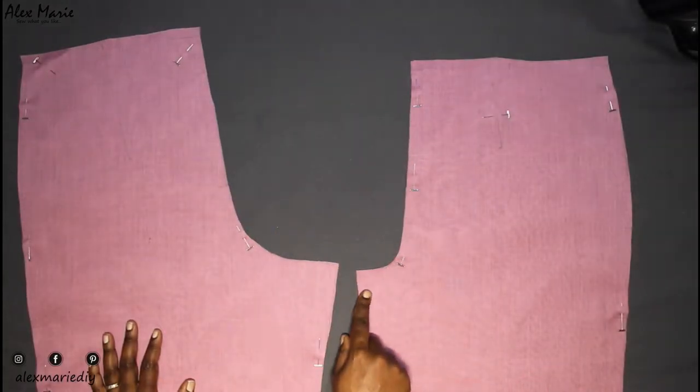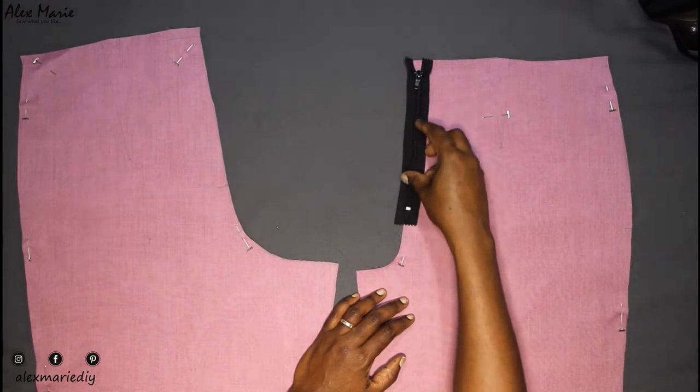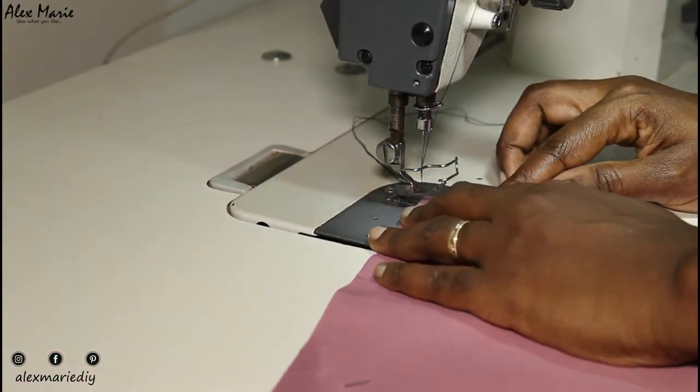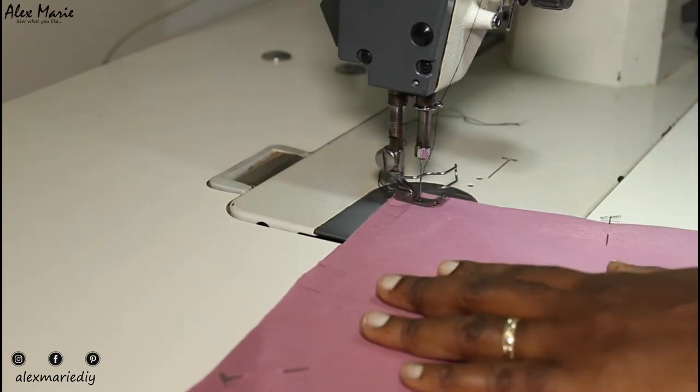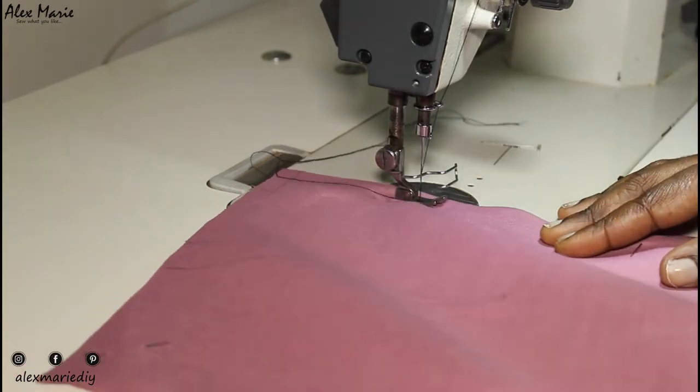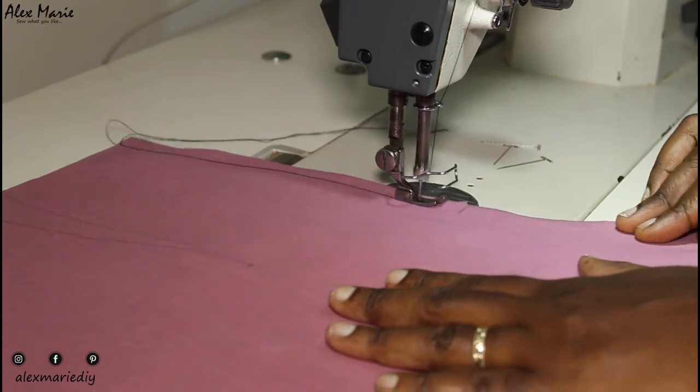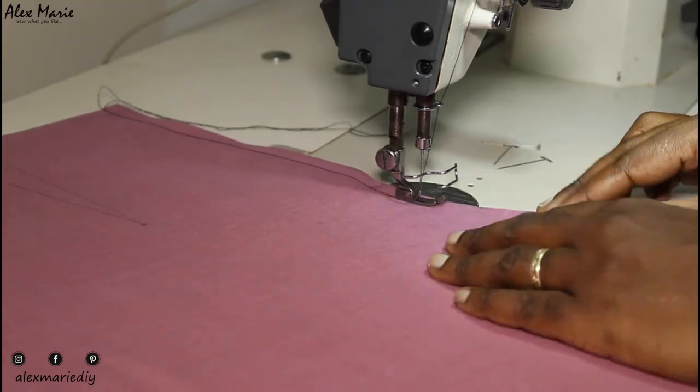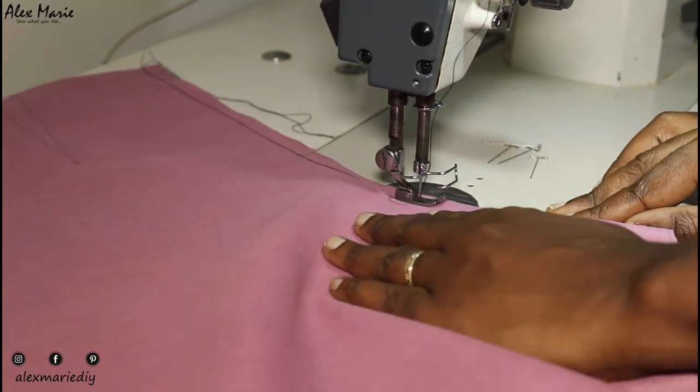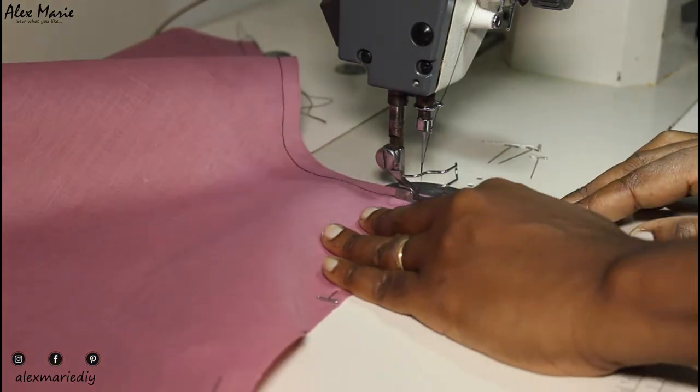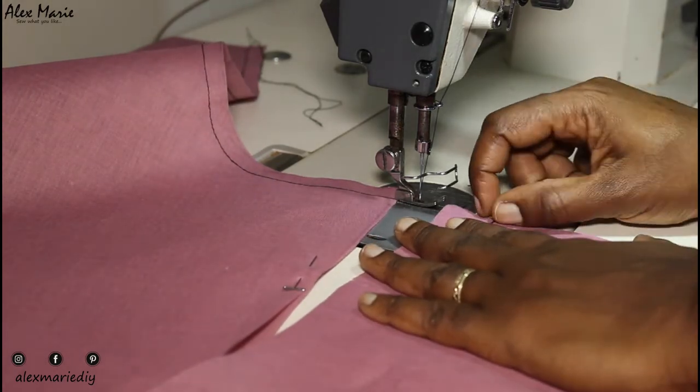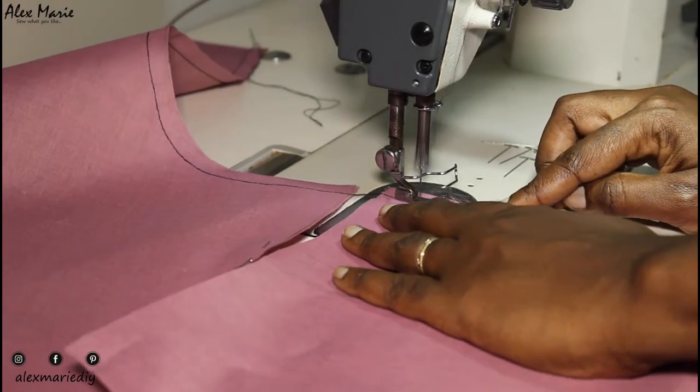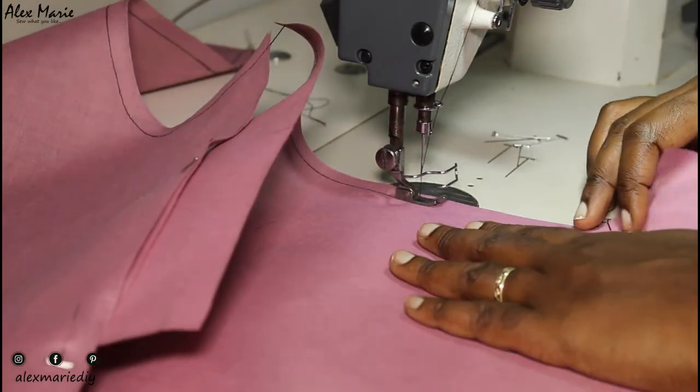Starting with the crotch seams, we're just going to sew down the front and the back to join them together and then we're going to insert the zipper at the front. So that's the back, two pieces joined together. And here's the front where the two pieces are joined together at the crotch.